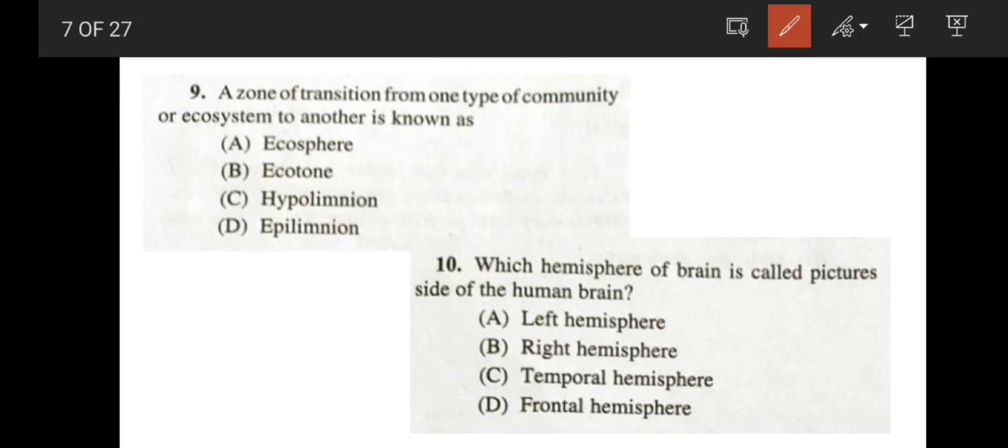Now, coming to the question number 9. Very easy one. A zone of transition from one type of community or ecosystem to another is known as ecotone, option B. Now, which hemisphere of the brain is known as picture side of the human brain? Left hemisphere, right hemisphere, temporal hemisphere or frontal hemisphere? The correct answer is right hemisphere. Because in the right hemisphere, the right hemisphere is also known as the artist hemisphere, because that hemisphere accesses all the images, image related informations. So correct answer is option B.